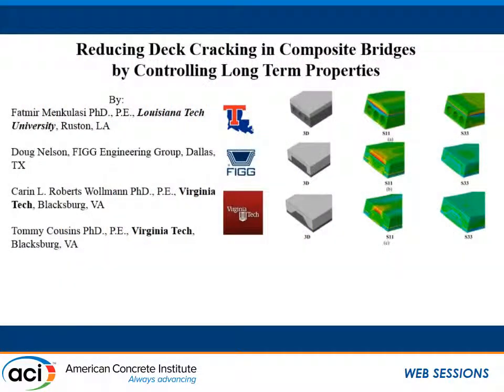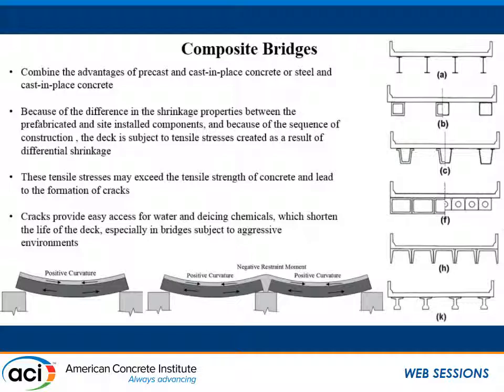My presentation today is going to be on reducing deck cracking in composite bridges by controlling long-term properties. Composite bridges combine the advantages of pre-cast and cast-in-place concrete or steel and cast-in-place concrete. However, because of the difference in the shrinkage properties between the prefabricated and cast-in-place components, and because of the sequence of construction, the deck is subject to tensile stresses as a result of differential shrinkage. These tensile stresses may exceed the tensile strength of concrete and lead to the formation of cracks. Cracks provide easy access for water and de-icing chemicals, which shorten the life of the deck, especially in bridges subject to aggressive environments.